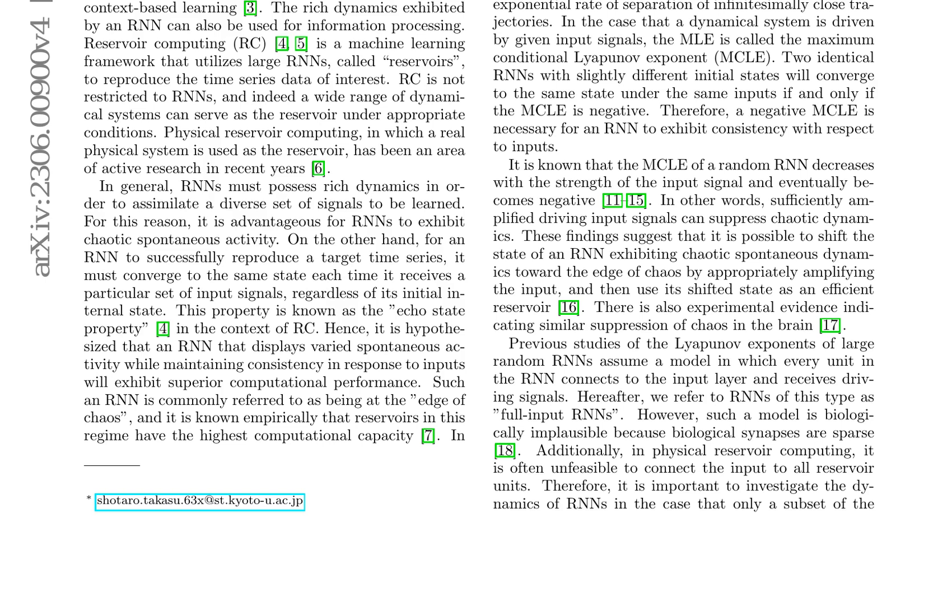When the proportion of input neurons exceeds the critical threshold, amplifying inputs can bring the neural network to the edge of chaos, maximizing its information processing capacity. The importance of chaos in RNNs is highlighted, citing its role in information processing in relation to the echo state property. Empirical evidence suggests that mammalian neuronal networks operate at the edge of chaos. The maximum Lyapunov exponent is used to quantify RNN dynamics with a negative value necessary for input consistency.